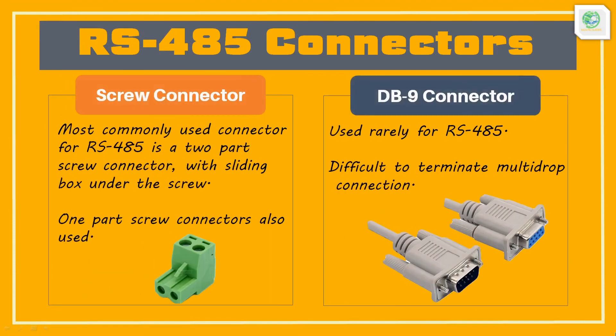We have known how data is sent and received in RS-485 on two-wire and four-wire connections. Now we will look at which type of connectors are used in connecting terminals on the network. Installation rules for RS-485 vary with manufacturer and no standard connector has been defined. Different manufacturers use different connectors, but the most common type used on most RS-485 systems is either a one-part or two-part screw connector.